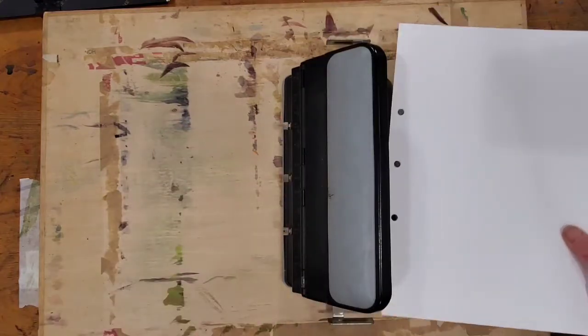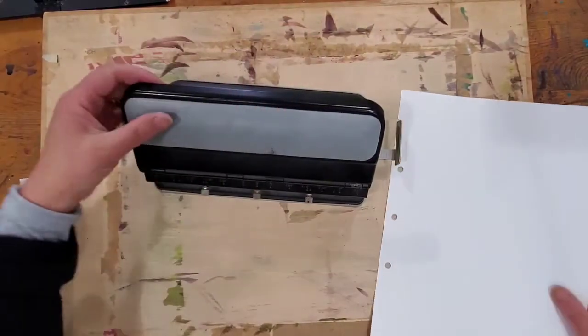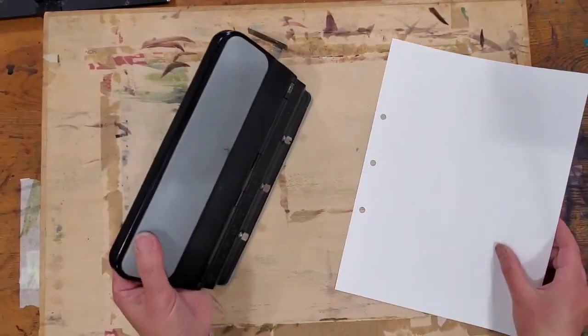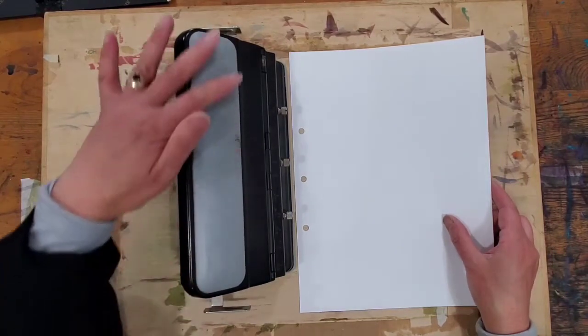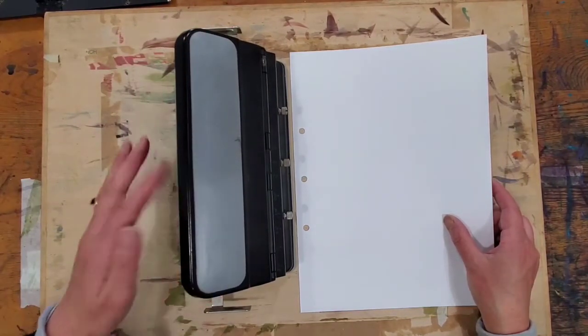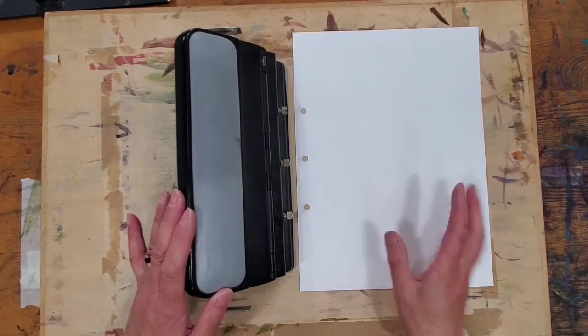And then you can move to a different location and punch again, and then you will have additional holes. So this is the main tool that we use for the sketchbook creation. You can find it in any office supply store, and probably there are lighter and easier versions. This is the one I had for many years. It works great.